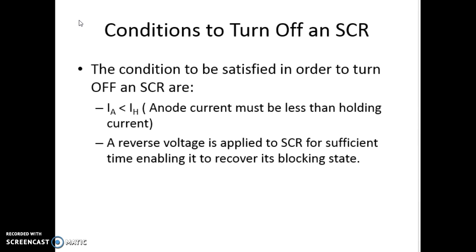The second condition is that a sufficient amount of reverse voltage has to be applied across the SCR, meaning the anode will be negative with respect to the cathode for sufficient time so that the SCR will turn off. So there are two points: one is the anode current has to be less than the holding current, and the reverse voltage has to be applied for sufficient time depending upon the SCR rating, so that it comes into the forward blocking state.